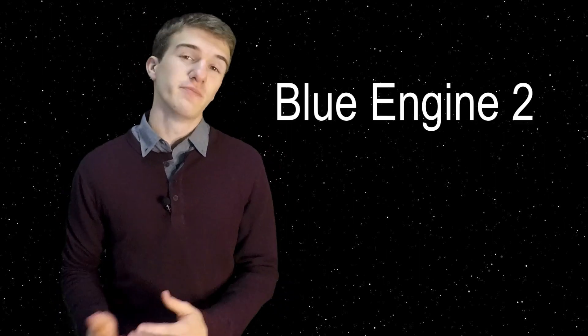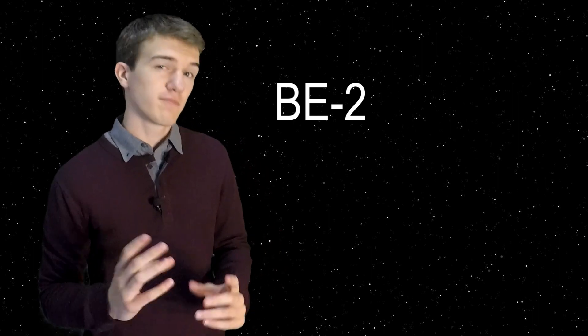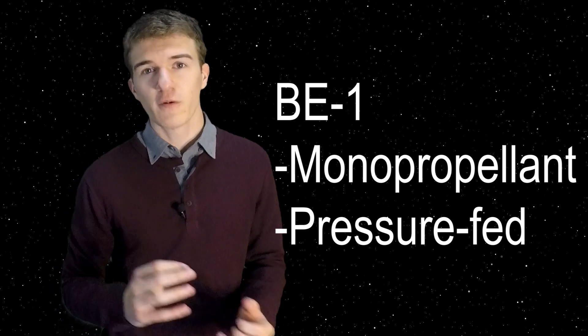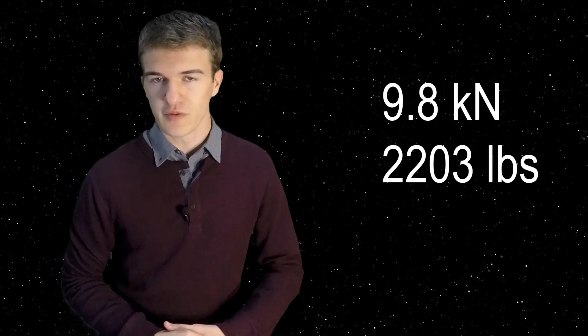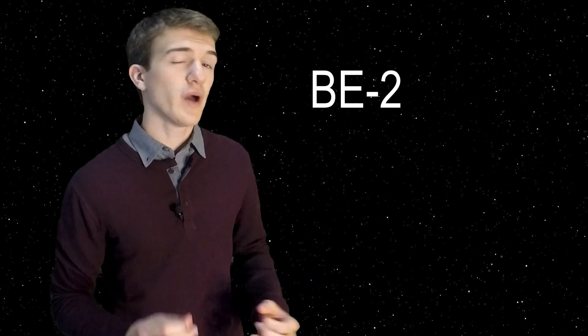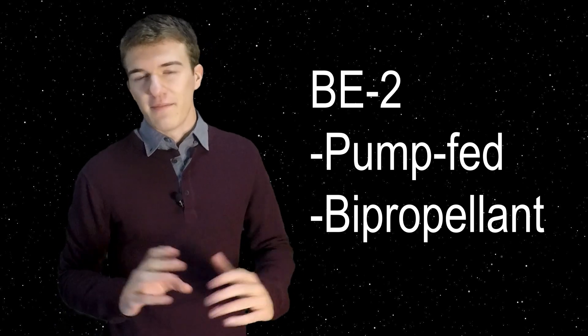The name of the new rocket engine is Blue Engine 2, or BE-2. If we recall, BE-1 was a monopropellant pressure-fed rocket engine which got around 9.8 kilonewtons of thrust. In order to make a stronger rocket and increase the thrust available, they would have to make BE-2 a pump-fed bi-propellant rocket engine. What exactly does that mean?